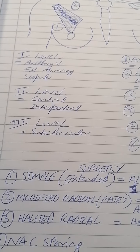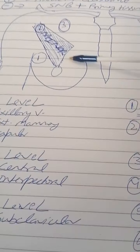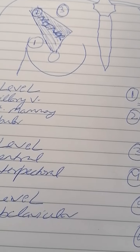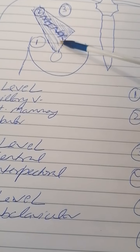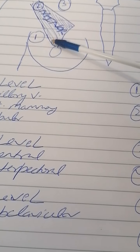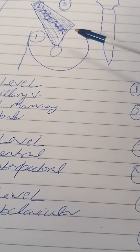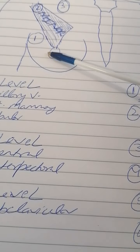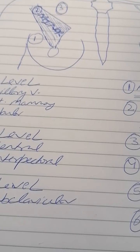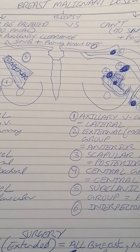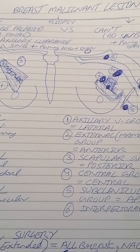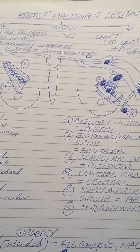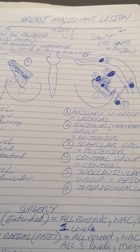The fourth option is nipple and areolar complex-sparing mastectomy, where we preserve this complex. This approach is becoming increasingly popular. Overall, these are the main points about breast malignant lesions and surgical management, with a few additional points important for exam purposes. Thank you.